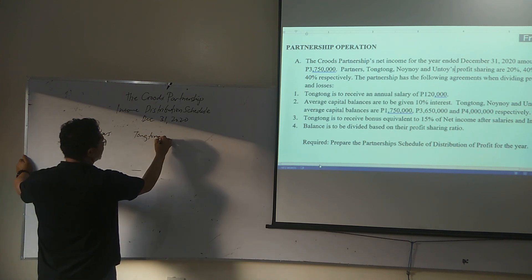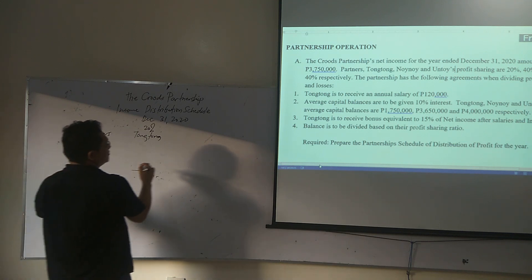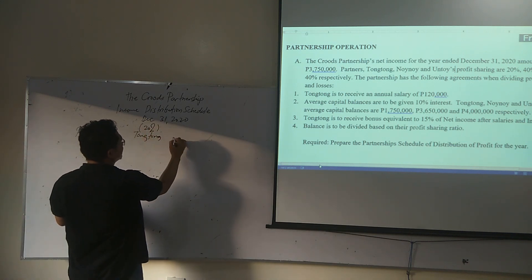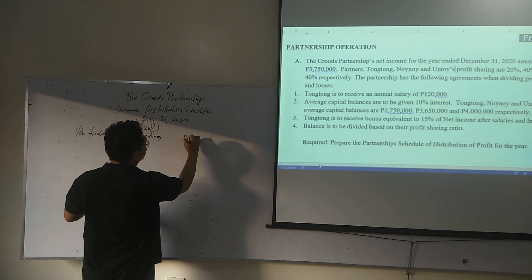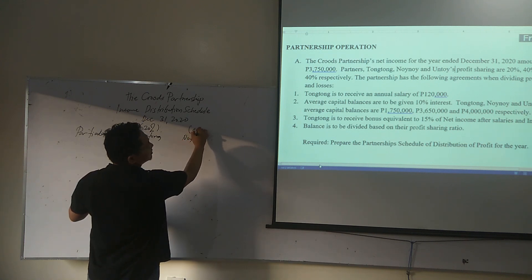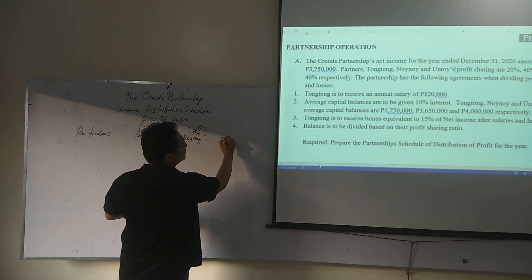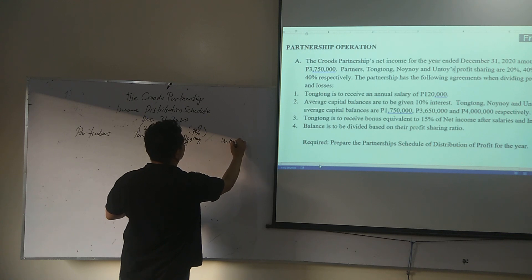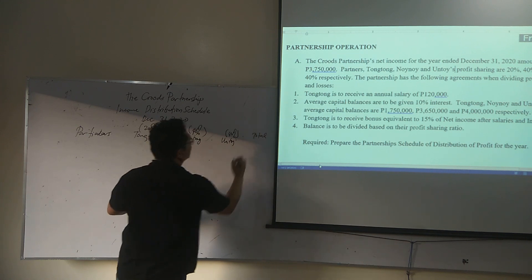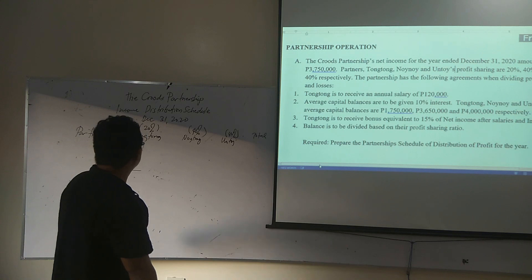Tongtong is getting 20% of the income. Then we have Winoy, who is getting 40% of the income. And we have Ontoy, who is also 40%. Then we provide a column for the total.